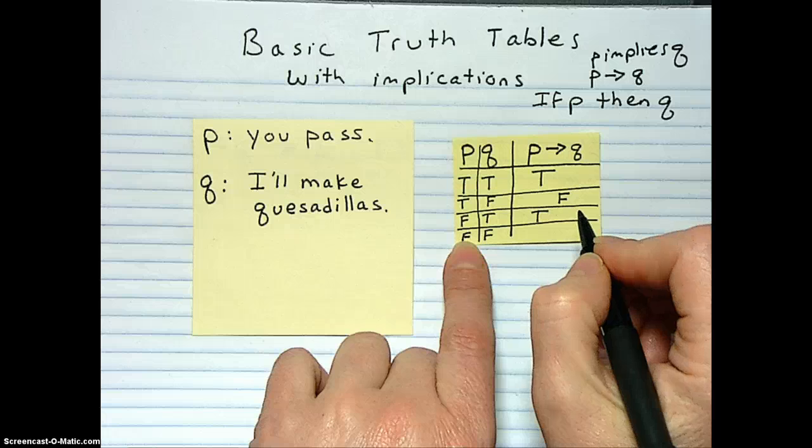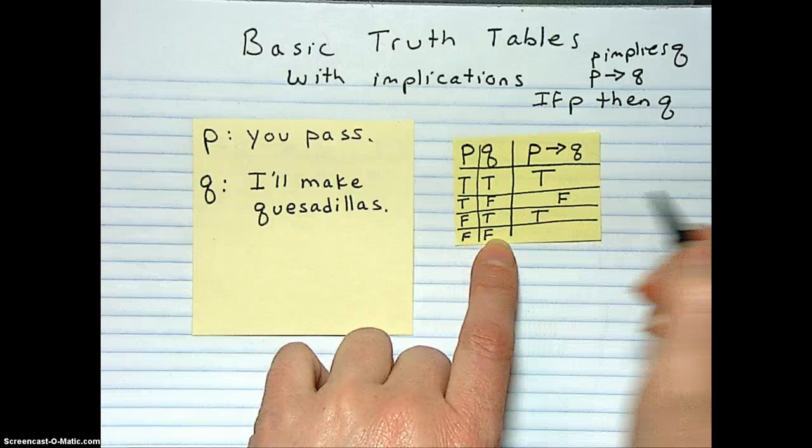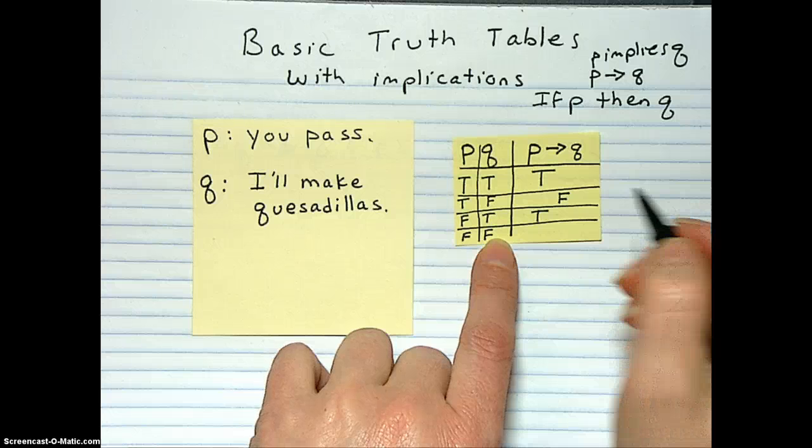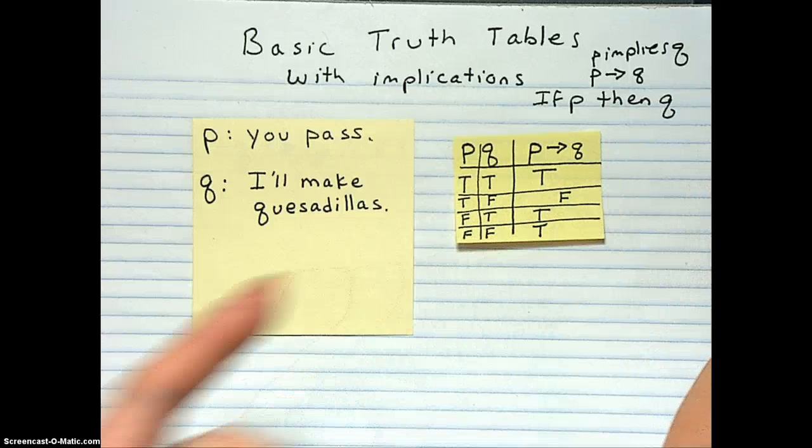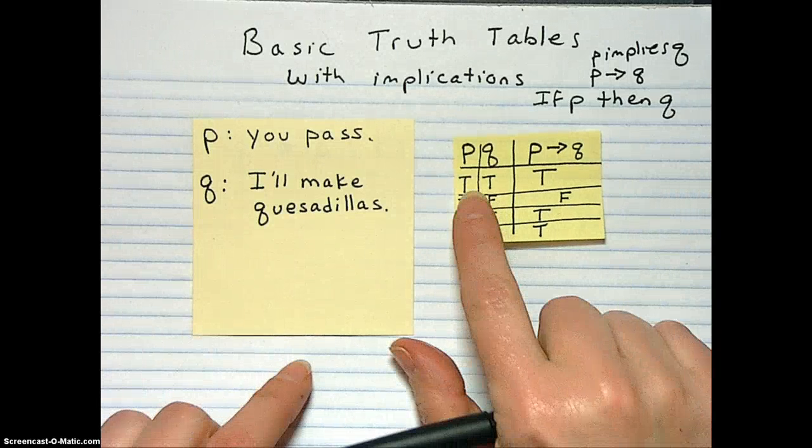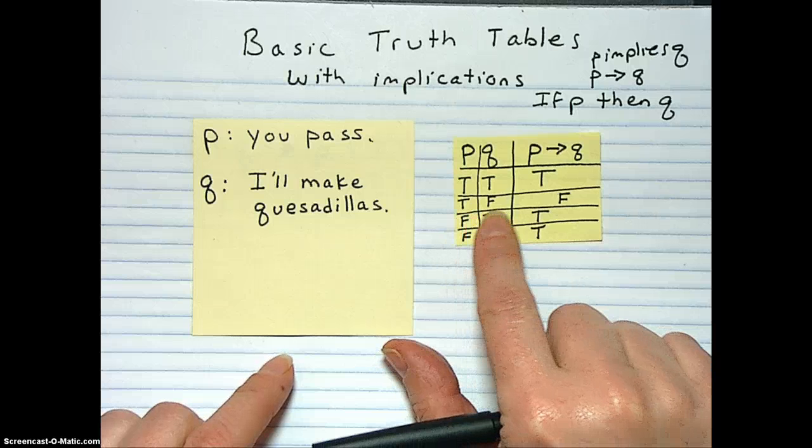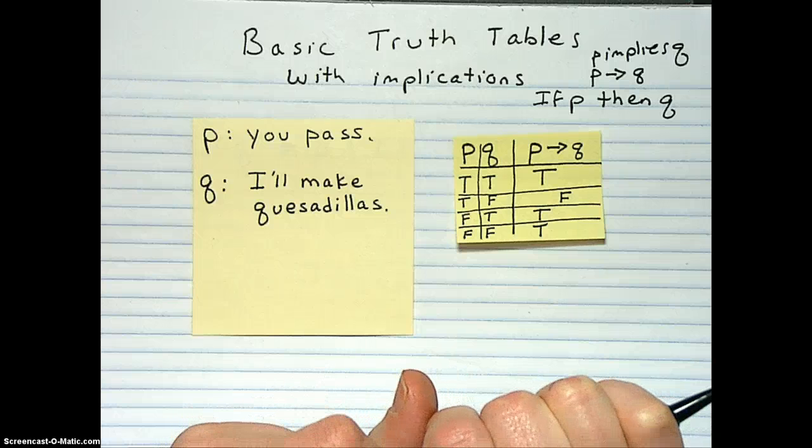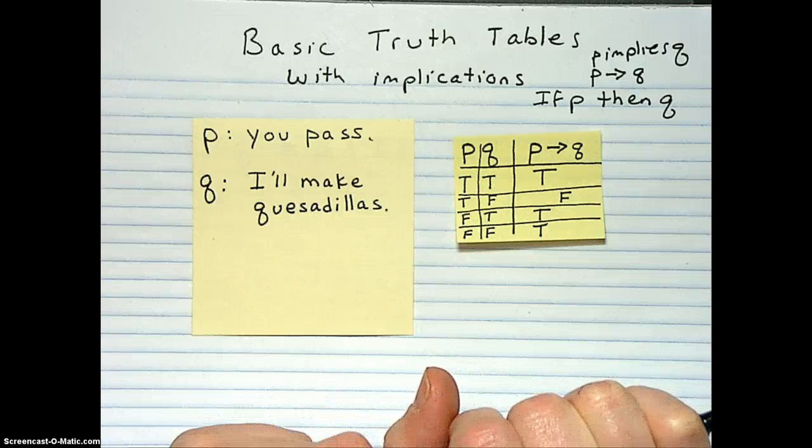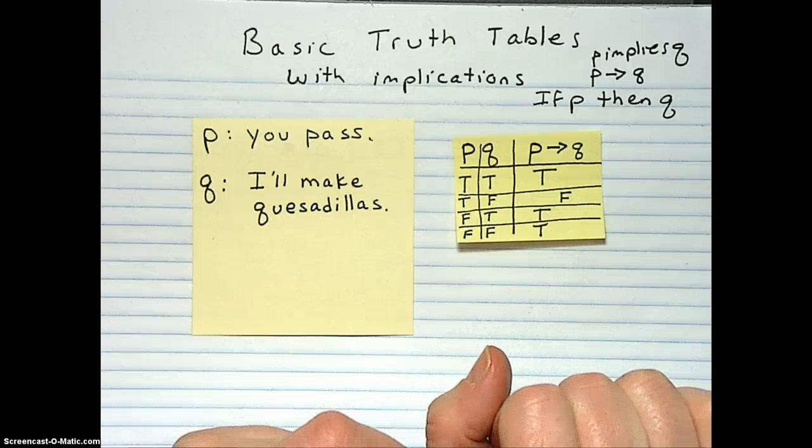Okay. This time, did you pass the class? No. Did I make quesadillas? No. Is that okay? Yeah. So this is true, right? Because I didn't promise it. I just said that if you pass, if you pass, I'll make you quesadillas. So the only way that this can be a lie is if you pass and I don't make you quesadillas. And then you can say mean things about me because I was mean and horrible and a liar. So this one only has one instance where it's false.